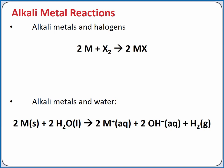Alkali metals have characteristic reactions with halogen atoms to form salts. For example, solid sodium metal reacts with chlorine gas to produce sodium chloride, an ionic compound.